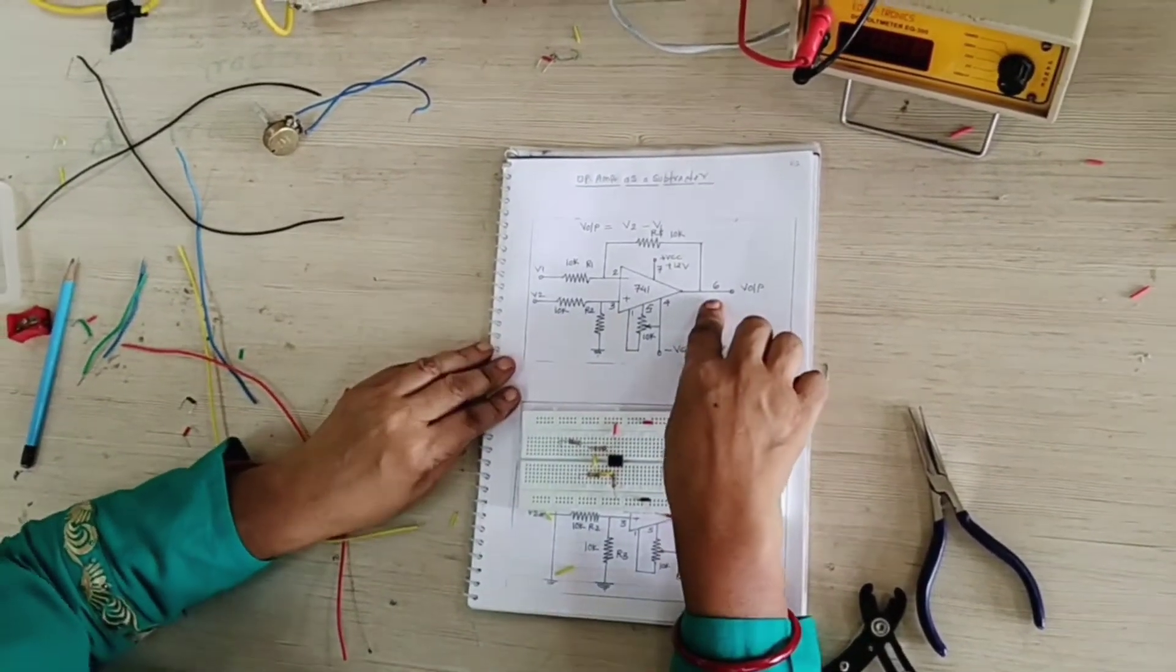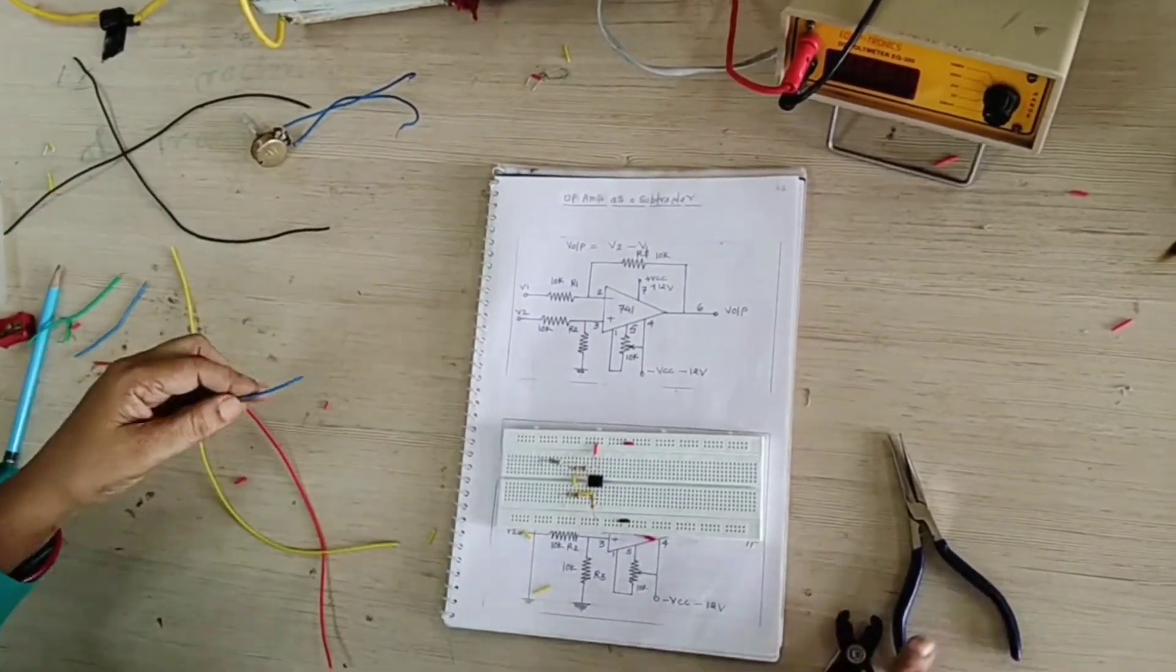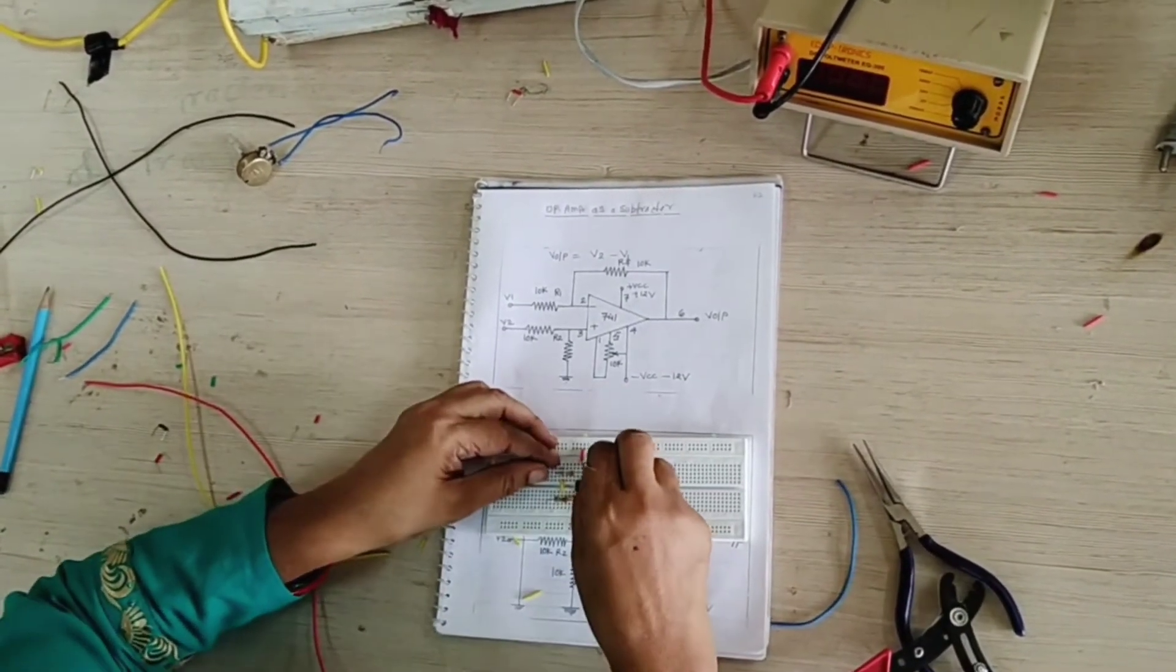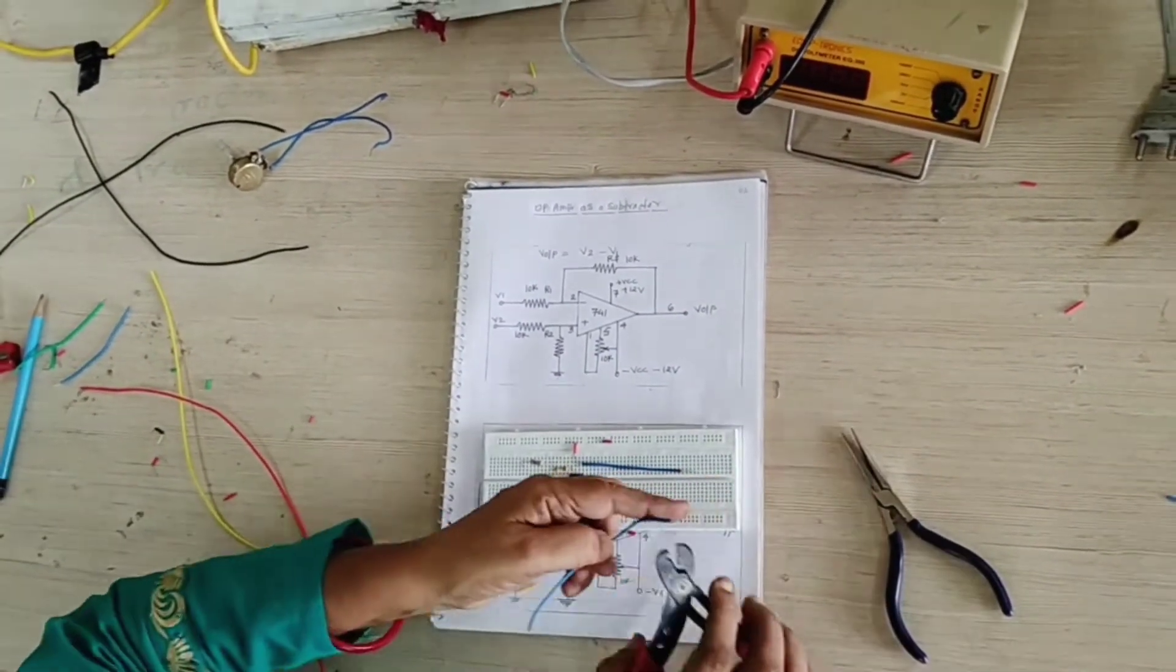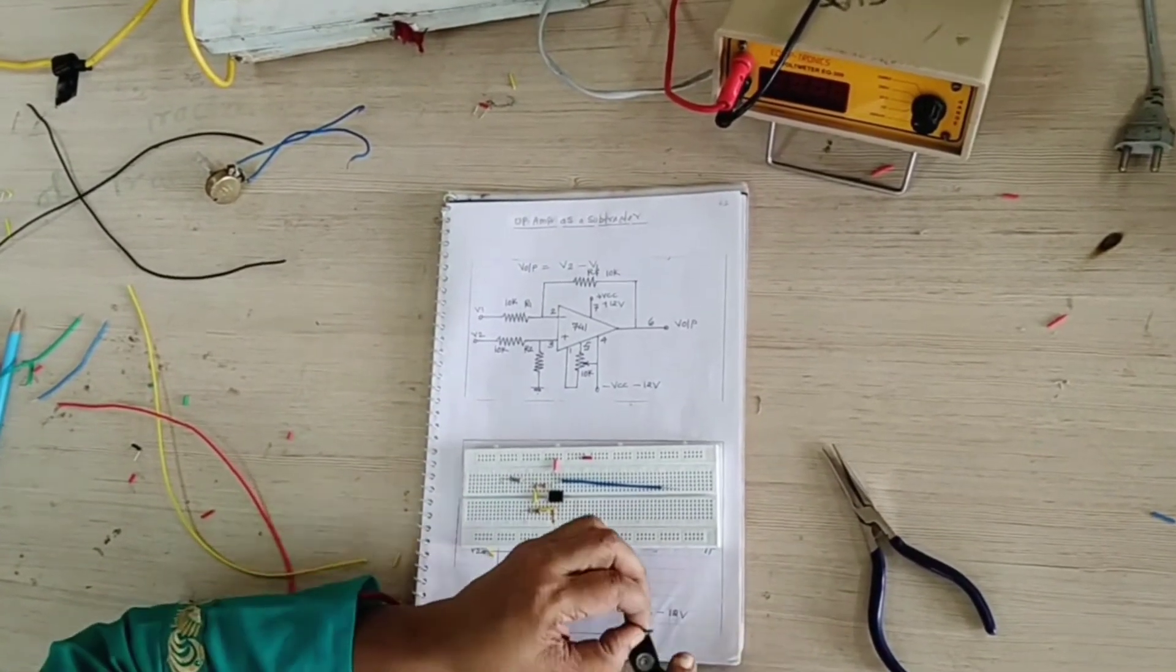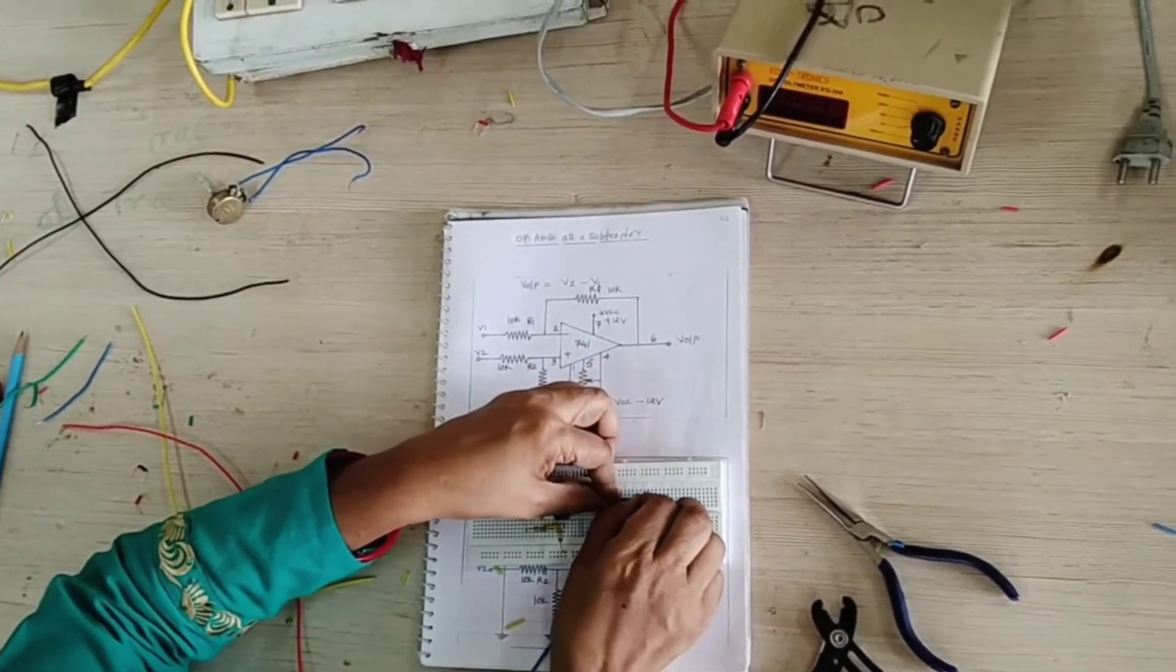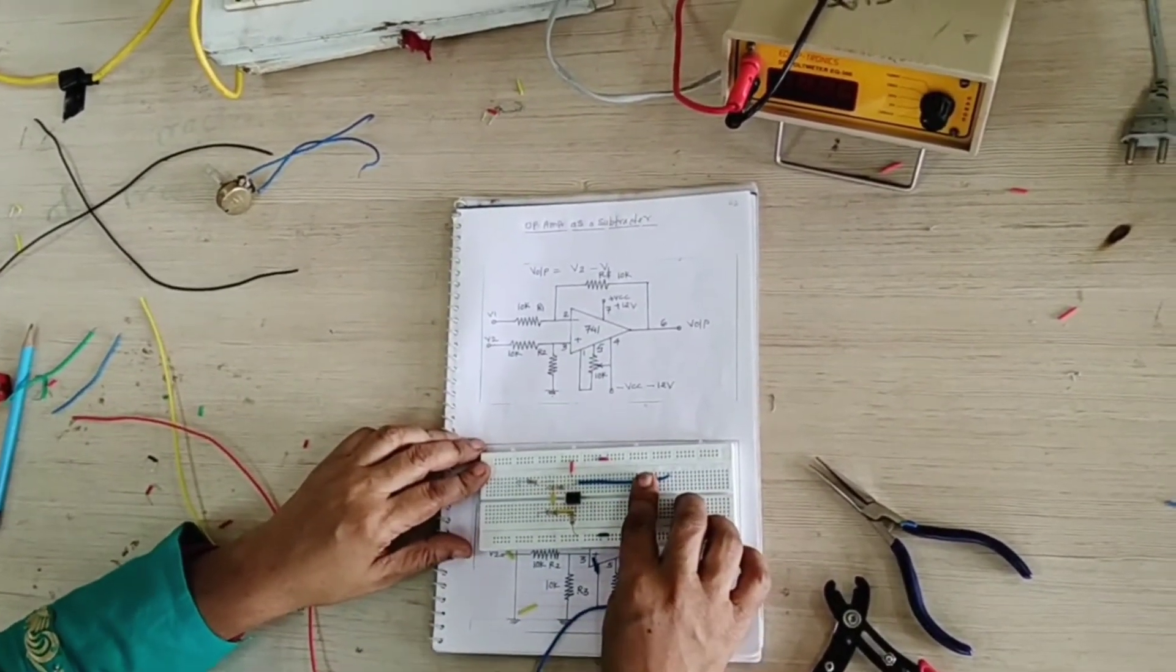And pin number 6 is your output indicated blue color of the wire. Your number 6, this is my number 6, this is your output.